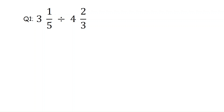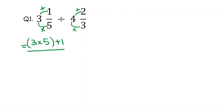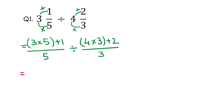How can we do that? You need to multiply the whole number with the denominator and add that result to the numerator. The same way, multiply the whole number by the denominator and add the result to the numerator. That is 3 times 5 plus 1 divided by 5, divided by 4 times 3 plus 2. That will be 15 plus 1 is 16 over 5, divided by 12 plus 2 is 14 over 3.